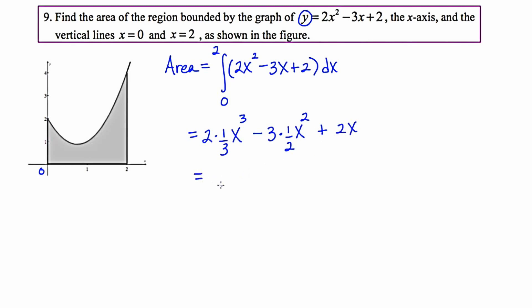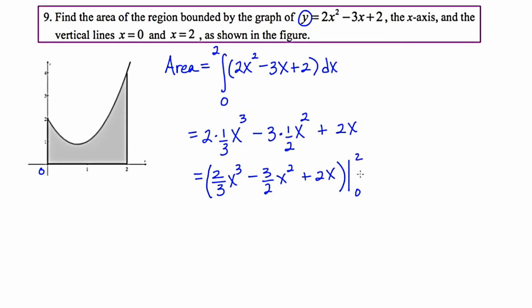Cleaning this up gives us two thirds x cubed minus three halves x squared plus 2x. Because it's a multi-term expression, I'll offset it with parentheses and introduce the bar notation, with 0 at the bottom and 2 on top. I always enjoy these problems when there's a zero, because when I plug it in, that whole thing just goes away.